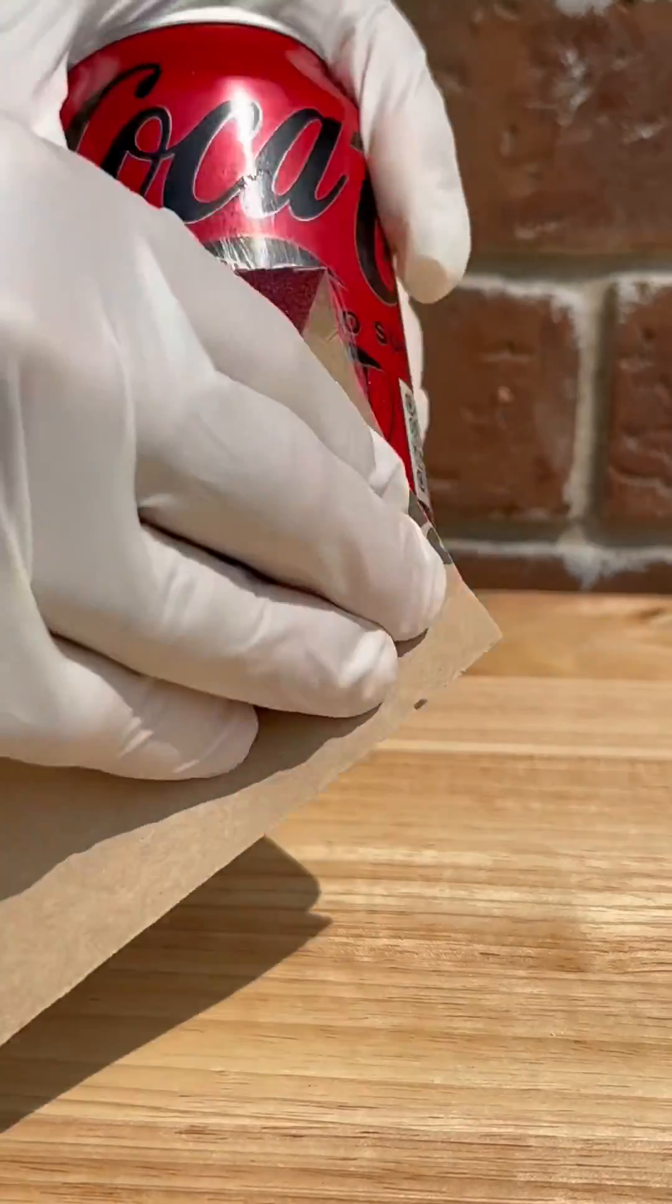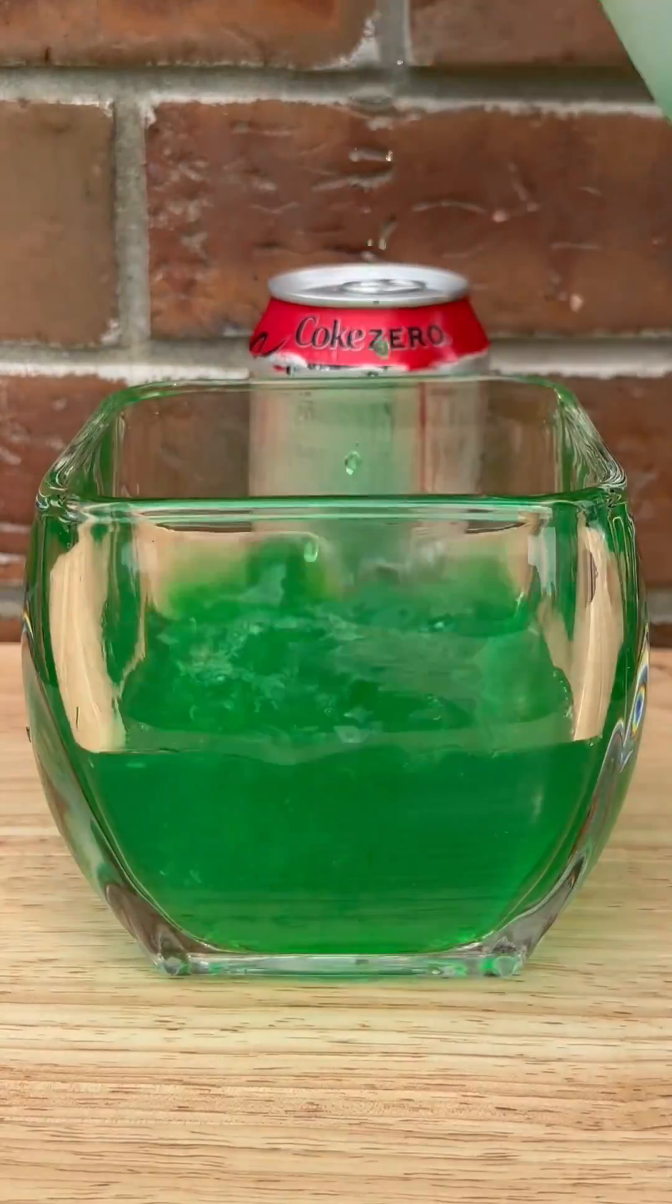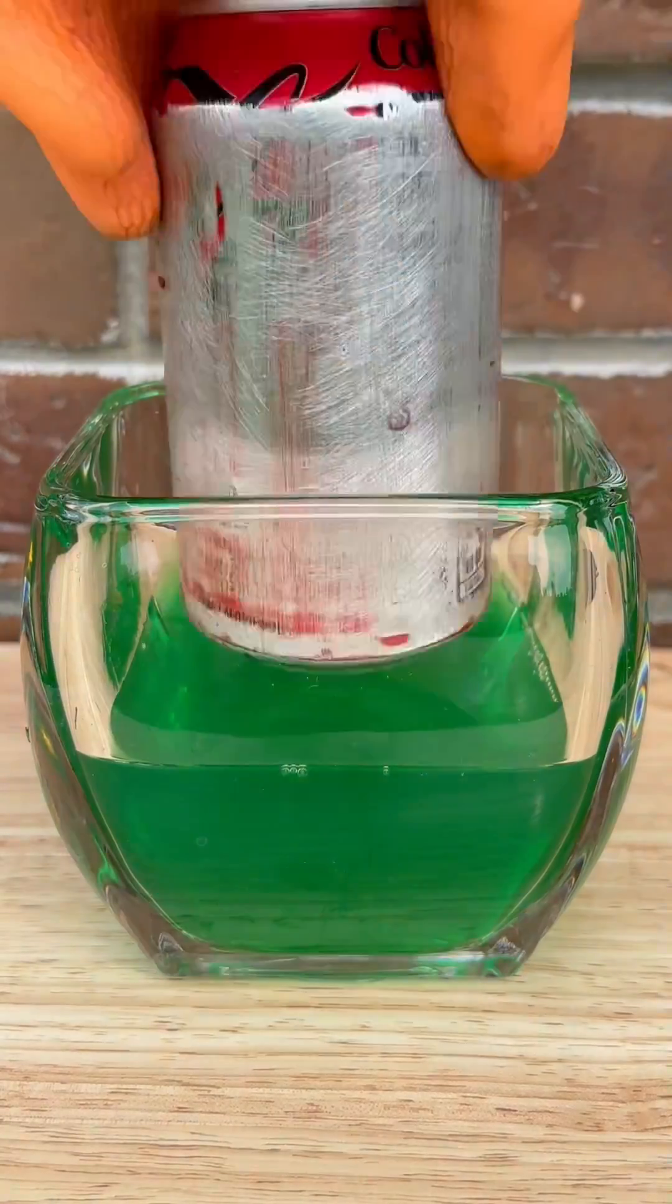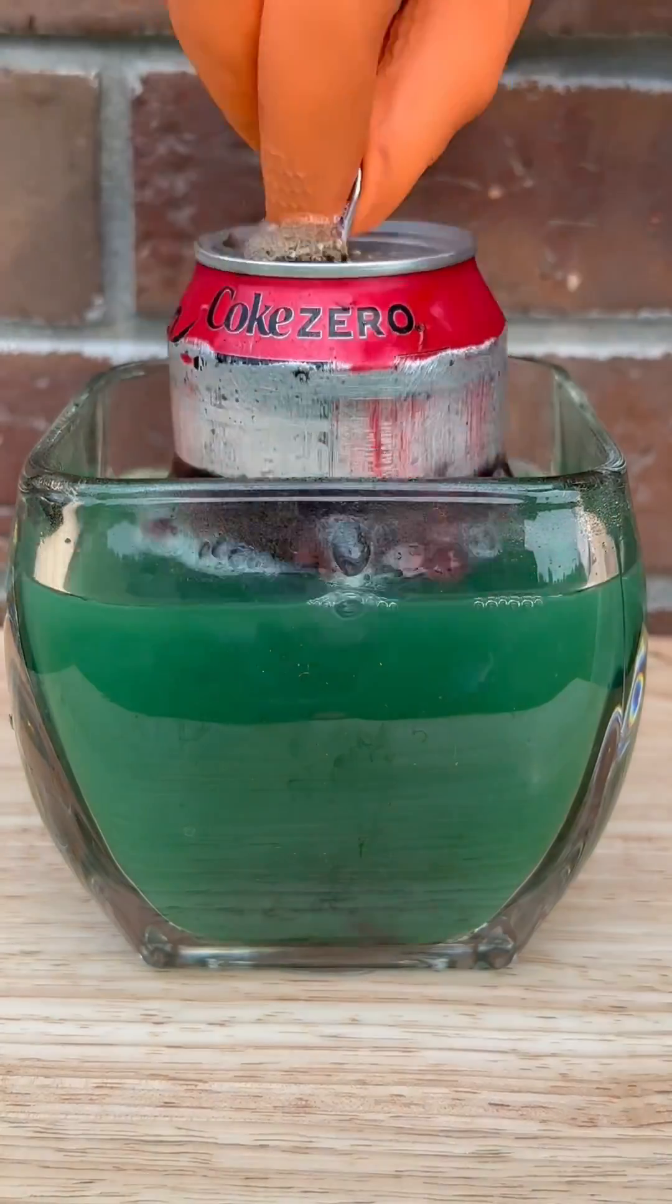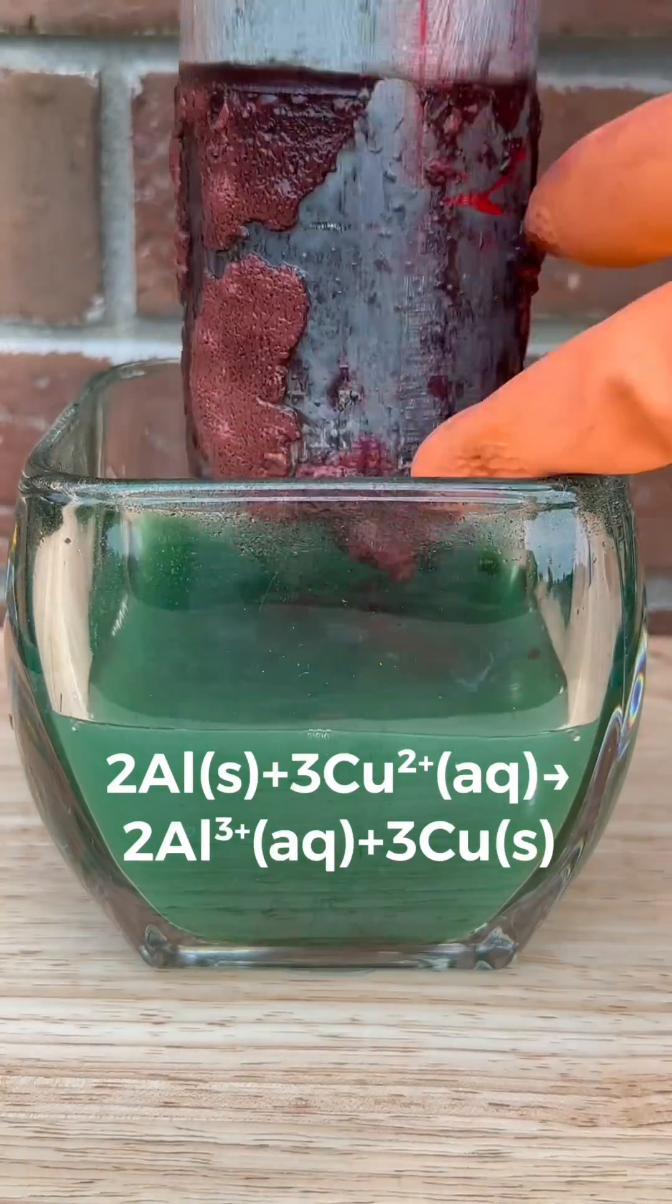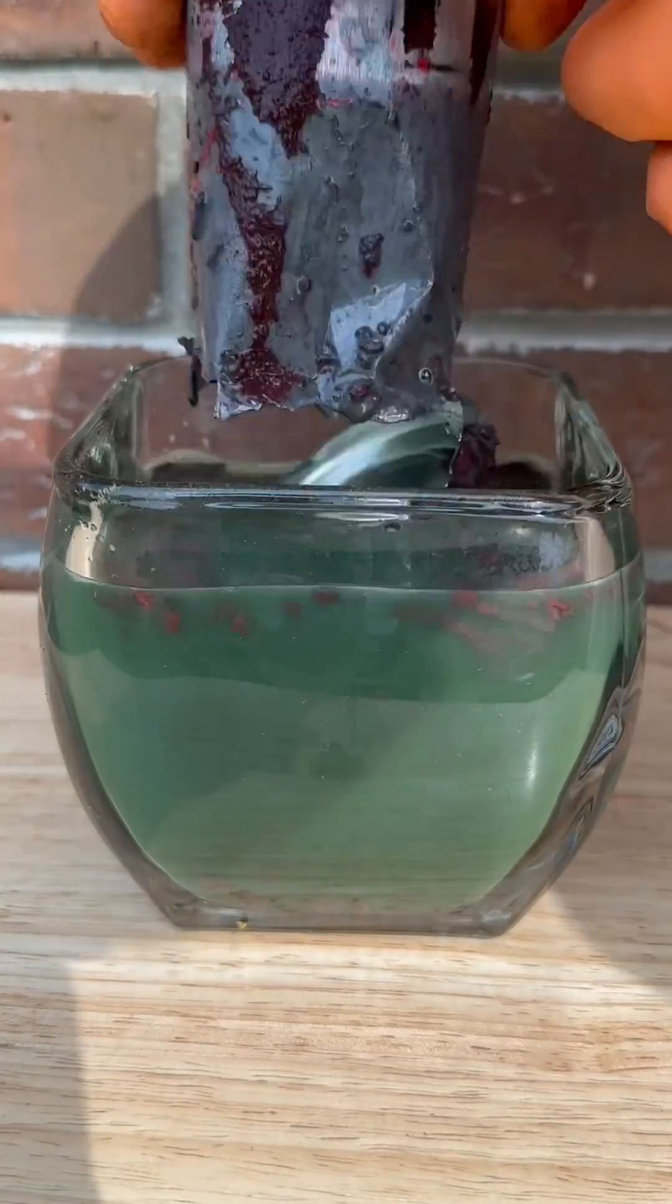I've also tried this experiment after sanding the paint off the can and also opening the can before placing it in the solution of copper. In this case, the results are a lot less messy. What I like about this particular method: you can see copper metal form on the outside of the can, and if you wait long enough, the copper solution will eat through the can.